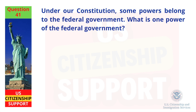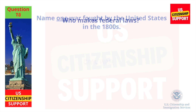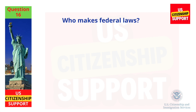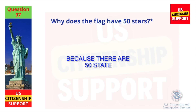Under our Constitution, some powers belong to the federal government. What is one power of the federal government? To print money. Name one war fought by the United States in the 1800s. Civil War. Who makes federal laws? Congress. Why does the flag have 50 stars? Because there are 50 states.